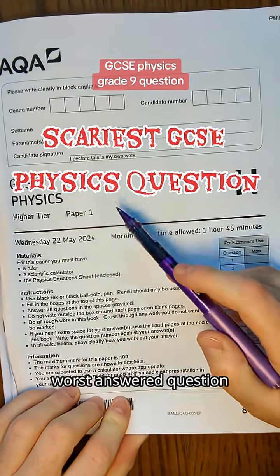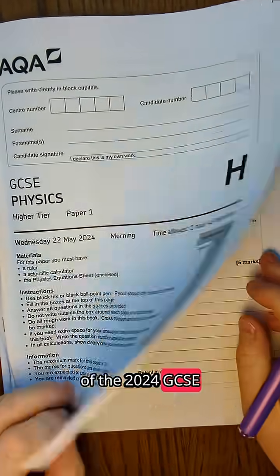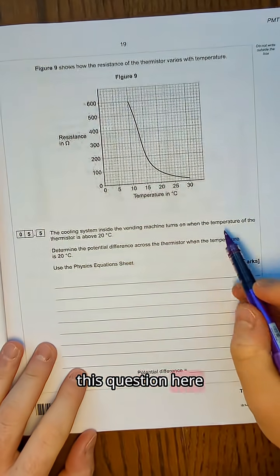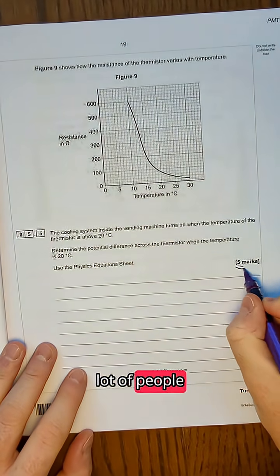Would you like to see the worst answered question on the whole of the 2024 GCSE Physics Paper 1? This question here is five marks and it confused a lot of people.